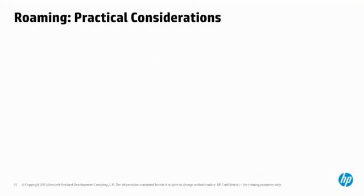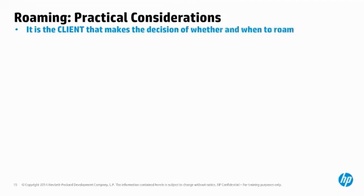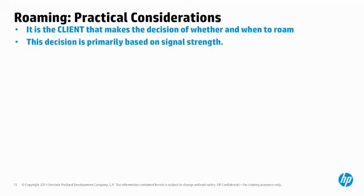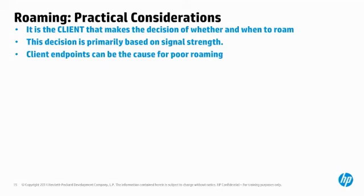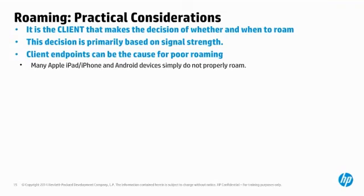When considering roaming operations, remember that it is the client device that makes the decision as to whether to roam and when to do so. This decision is primarily based on signal strength. As AP1's signal gets weaker and AP2's signal gets stronger, the client WNIC decides to roam — or not. Client endpoints can be the cause of poor roaming performance. Many Apple iPads, iPhones, and Android devices simply do not roam properly, as they seem to have been envisioned as home-consumer items rather than enterprise-class corporate devices.